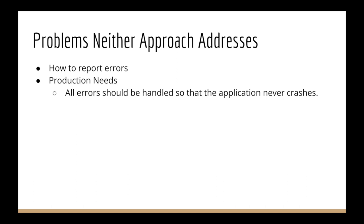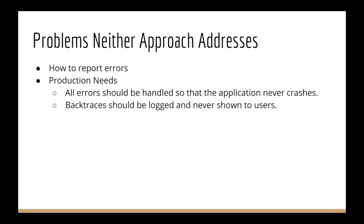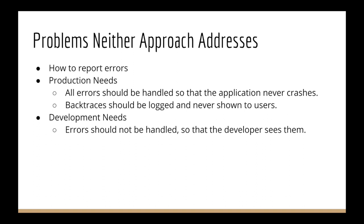In production, you should have all errors handled at some level so that your application doesn't crash. You don't want customers to see a Python crash with a stack trace — that gives out too much information and looks unprofessional. So your application should never crash. If there are errors, you send them to a log or by email to yourself, because the app is running at a customer site.